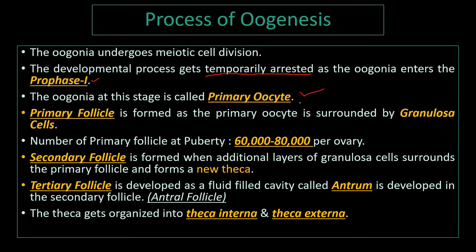The primary oocyte gets surrounded by granulosa cells and is now called the primary follicle. At puberty, the number of primary follicles is around 60,000 to 80,000 per ovary. The primary follicle undergoes further development, gaining additional layers of granulosa cells and a new theca layer to become the secondary follicle. The secondary follicle then develops into a tertiary follicle when a fluid-filled cavity called the antrum is formed. The theca organizes into theca interna and theca externa.